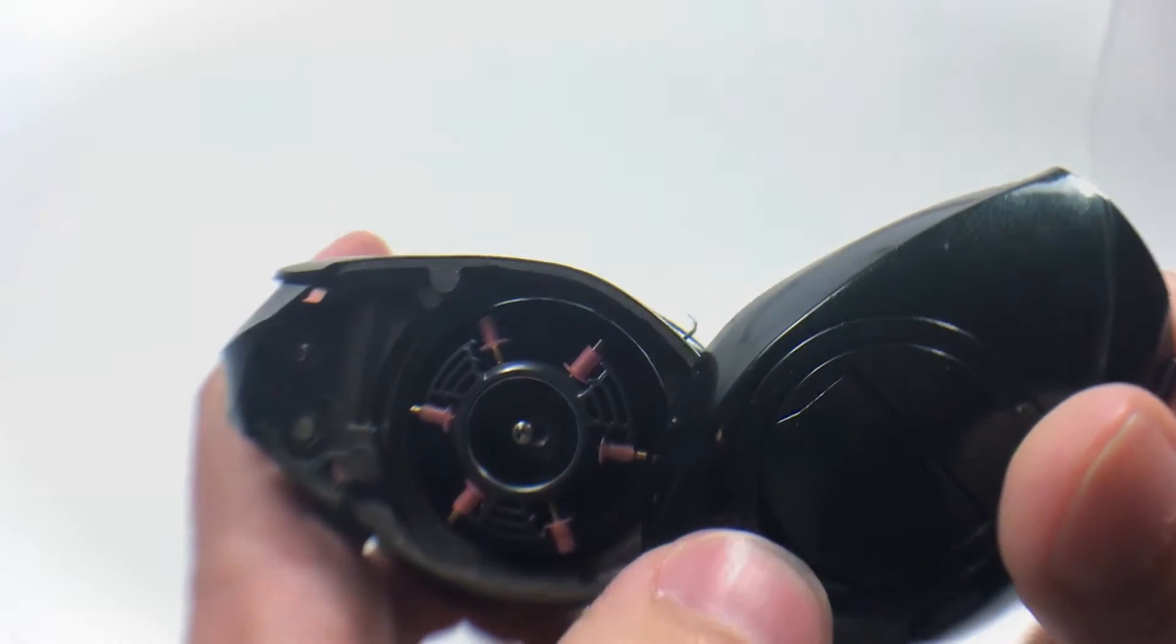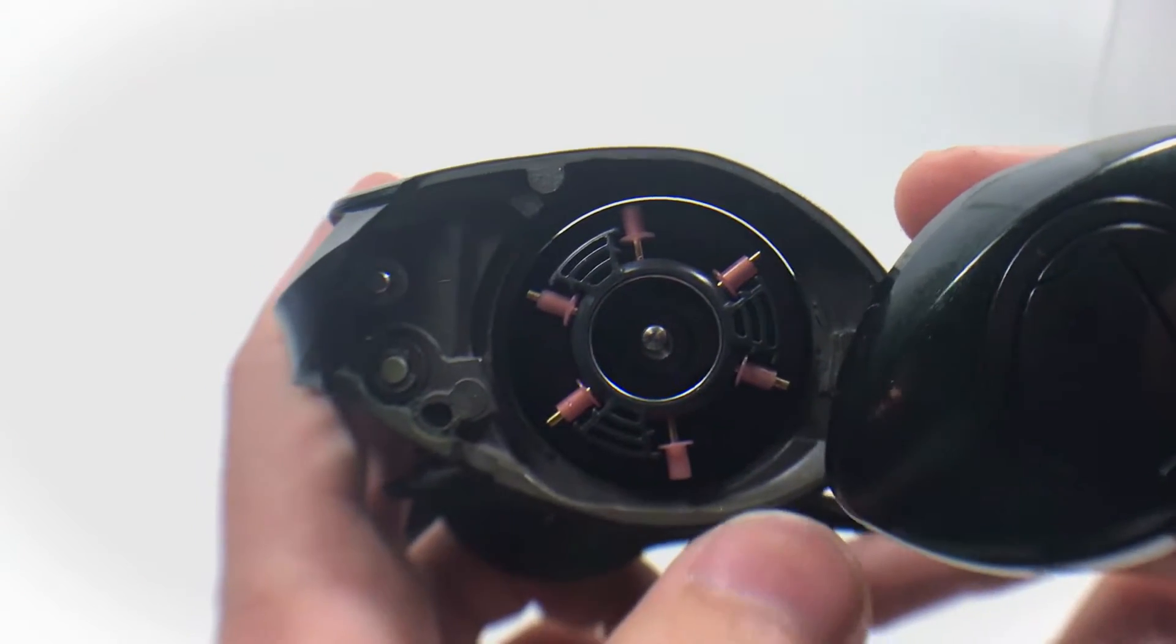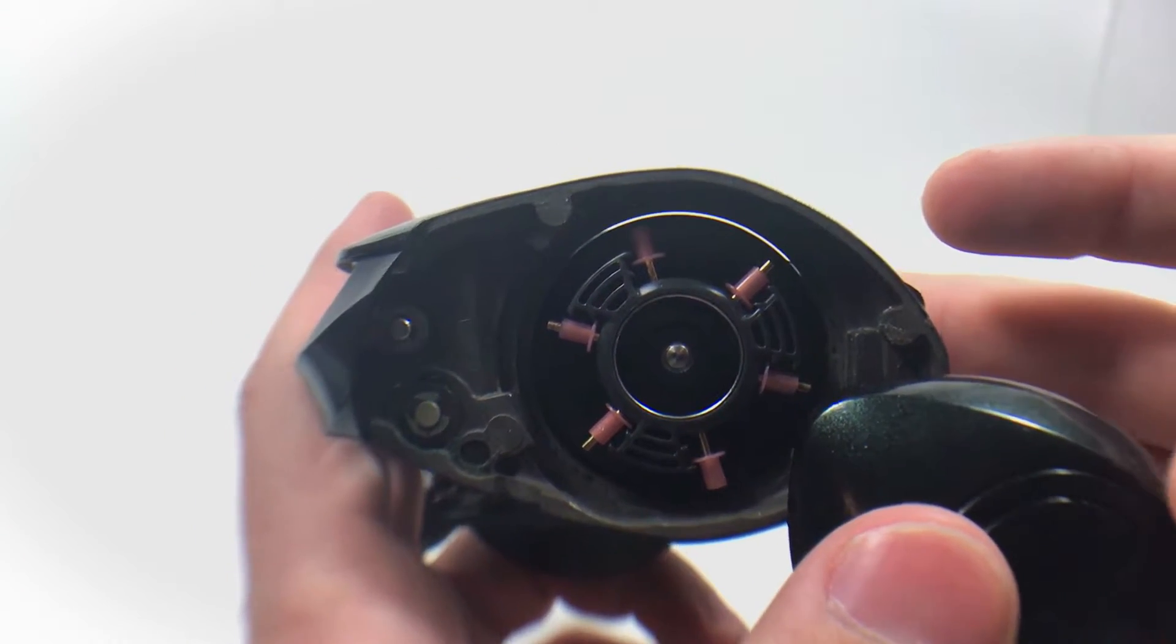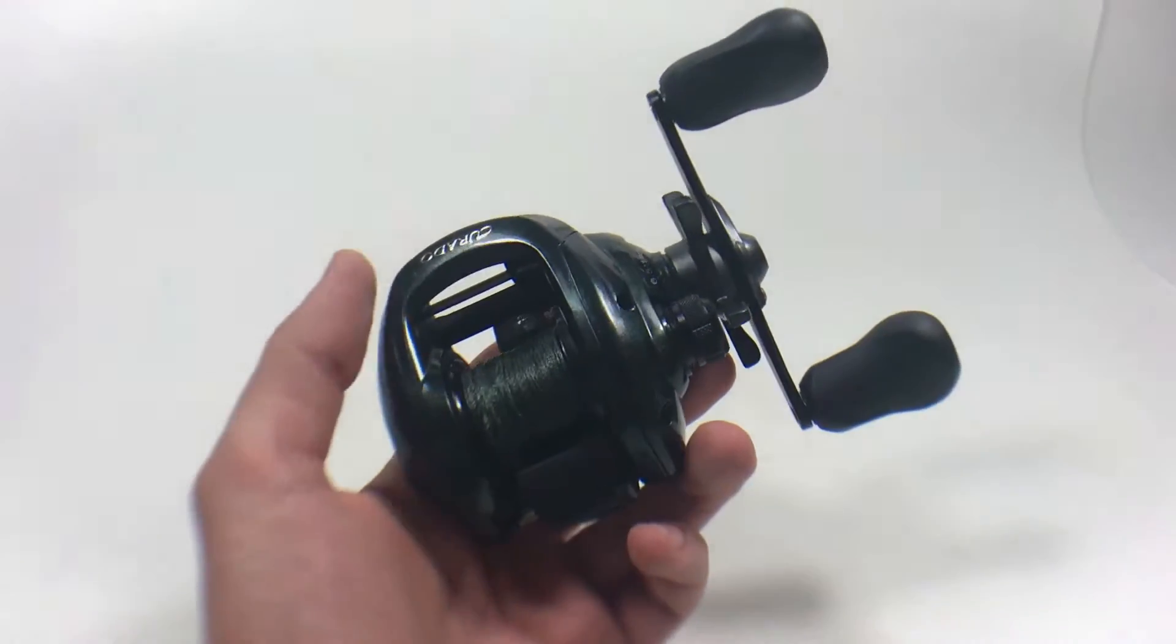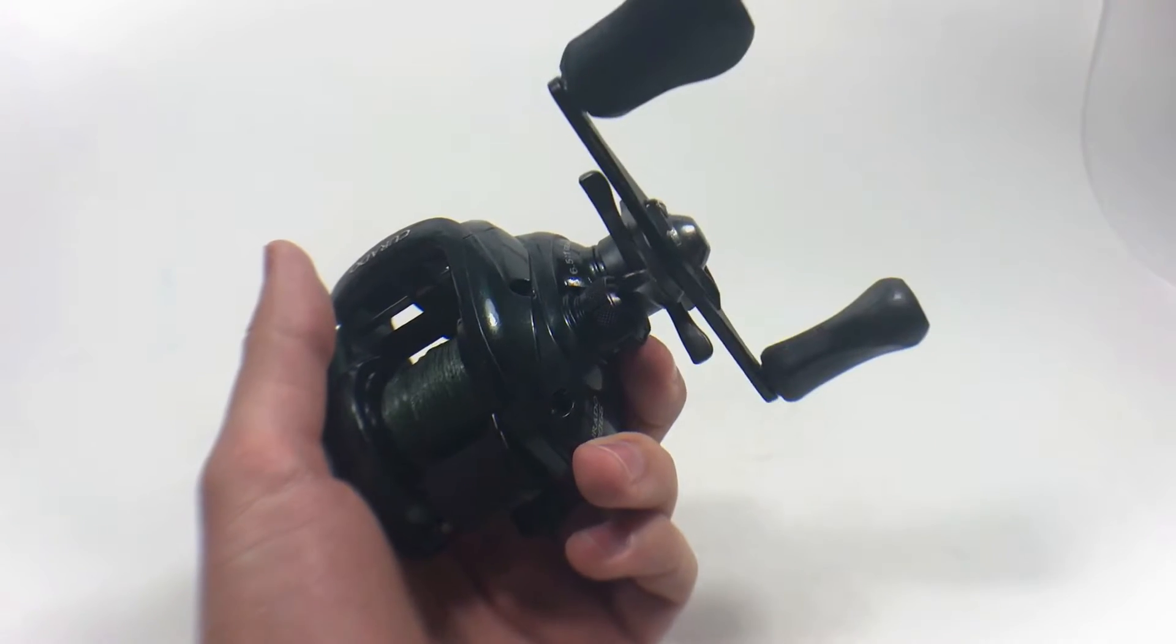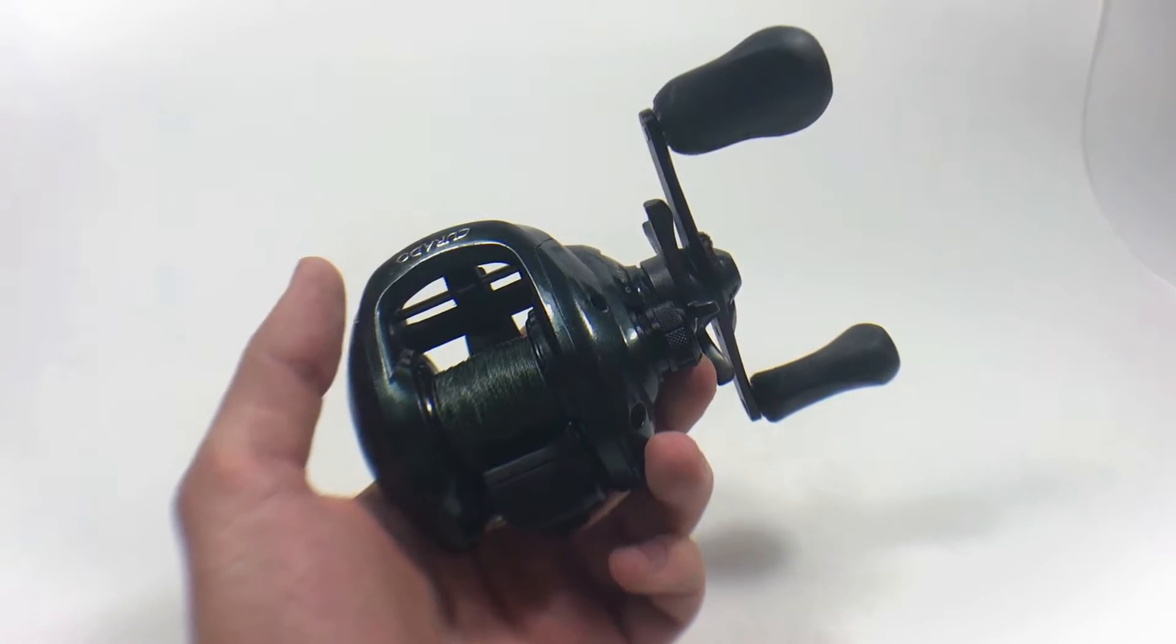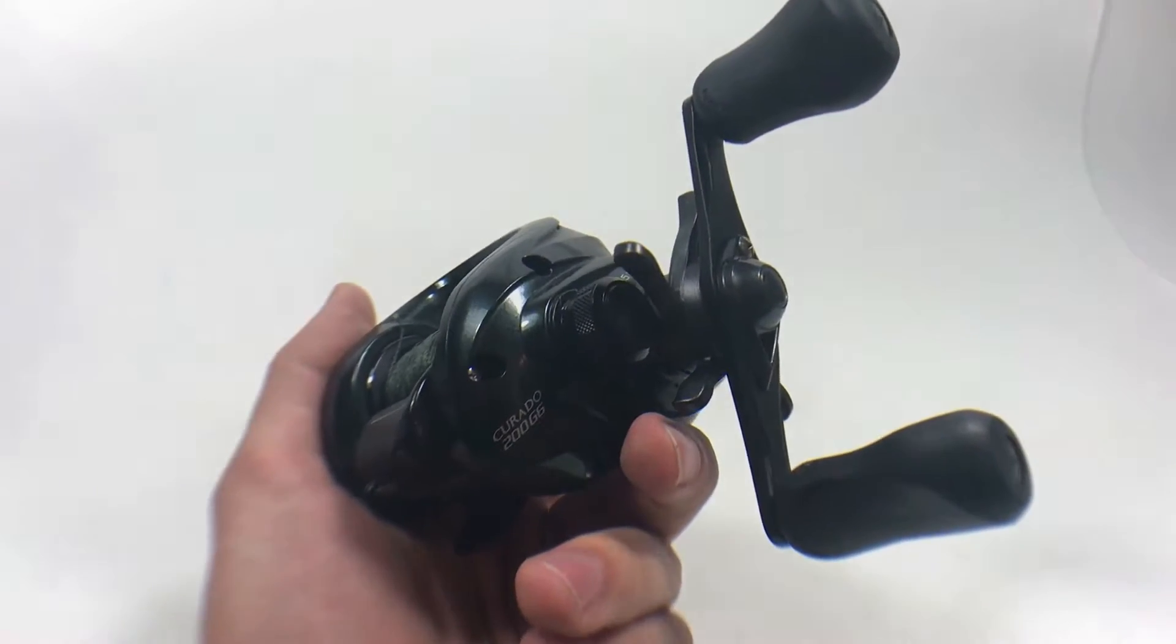Again, I've always liked the braking system in Shimano's. I know some people absolutely hate them, but these are just reels that I grew up on. I'm just very familiar with them. I've caught several fish off this, some of the biggest bass I've ever caught, even a couple of saltwater fish. I've had a couple of redfish, speckled trout off of it too. Other than that, yeah, that is the Curado 200 G6.